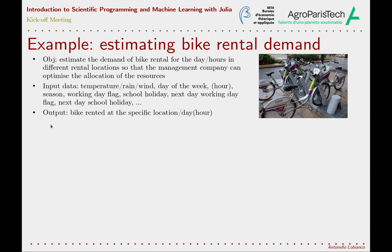Let's start with a first example of a machine learning algorithm and see how it differs from a statistical model. We'll see this example again in operation later today when we will have a hands-on session on machine learning models, still without entering too much into the details, while we will try to understand it fully later during the course. But for now let's just see what are the objectives, the input and the output of the model — or rather of the task, as there isn't really a model underlying it.